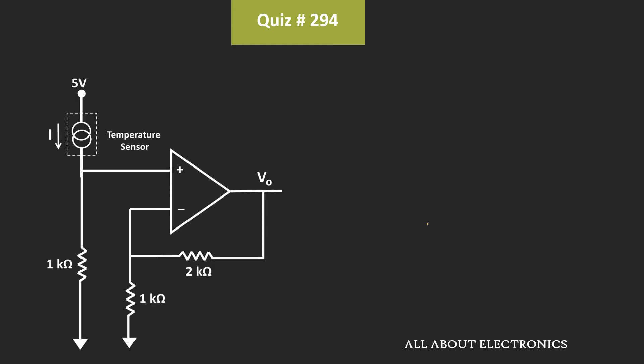Now here, we have been also given that the op-amp is the ideal op-amp. That means no current is flowing into the op-amp terminals. So this current I, which is flowing through the temperature sensor, will also flow through this 1 kΩ resistor. And let's say, because of that, the voltage dropped across this 1 kΩ resistor is equal to Vx.